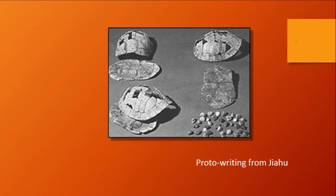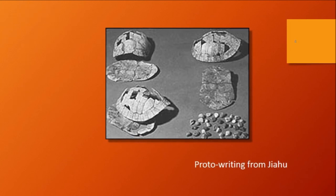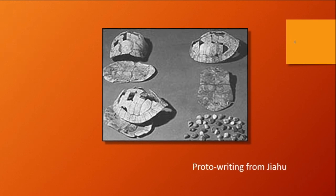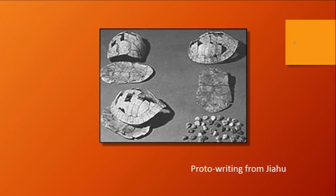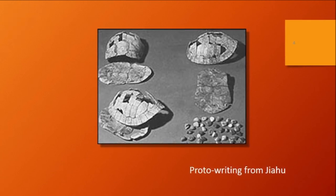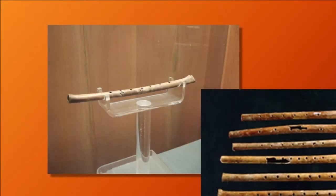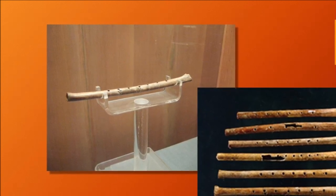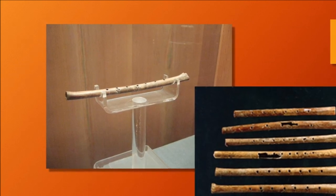The reason I want to talk about that is because the next slide shows a real musical instrument — a flute — created at Jiahu from the earliest periods of the site. Here you have the flutes. They are found in all layers of Jiahu 1, 2, and 3, and these are made out of red crane bones.